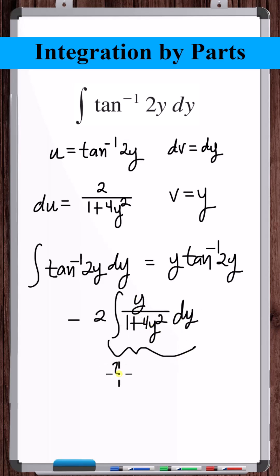Here we can make a substitution that z is equal to 1 plus 4y squared. So 1 eighth dz is equal to y dy. So this integral becomes...